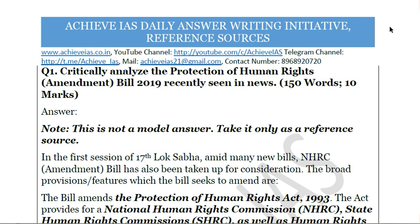Before starting, let me clarify that I was using the phrase 'model answer,' but there is no model answer in UPSC because each question has its own positives and negatives. If a model answer existed, every topper would have scored 100% marks, but the range of marks scored by toppers is between 50 and 55%. So you can take this only as a reference source.